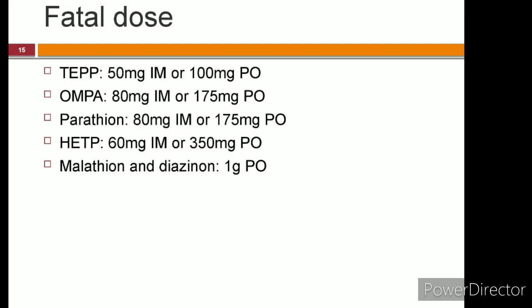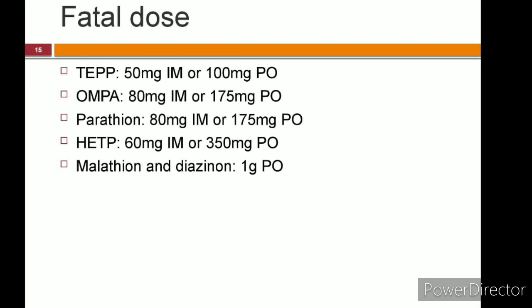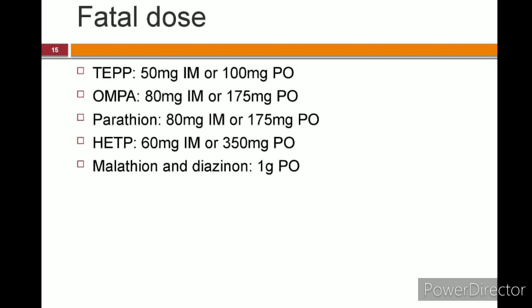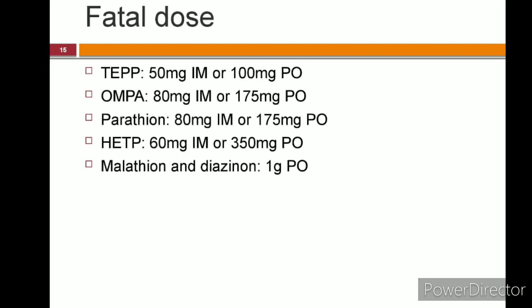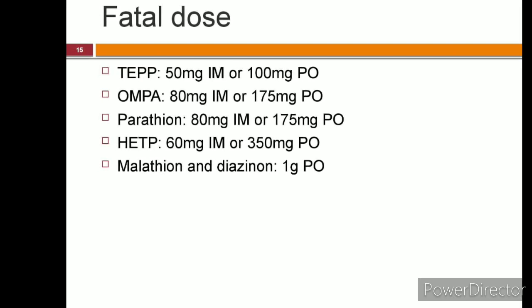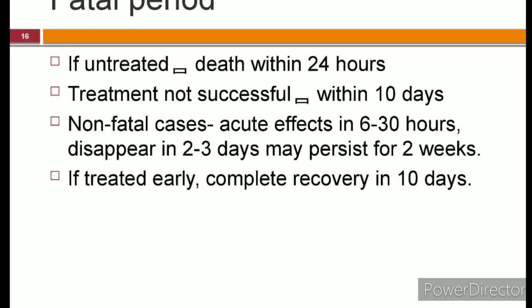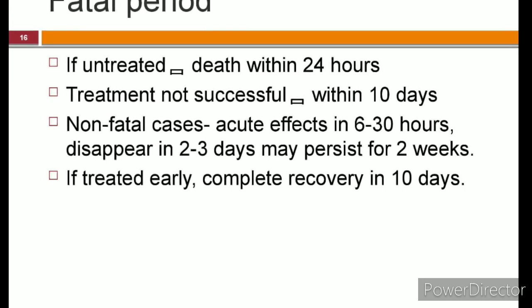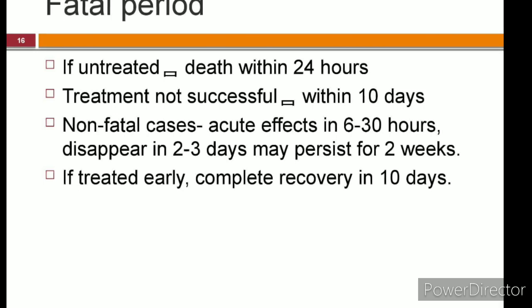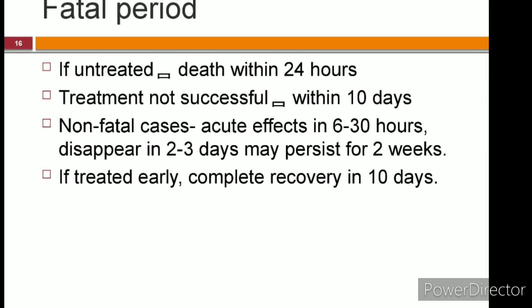The fatal dose differs for each compound. For TEPP it is 50 mg intramuscularly or 100 mg orally; for OMPA, 80 mg intramuscularly or 175 mg orally; for HETP, 60 mg intramuscularly or 350 mg orally; for malathion and diacinon, 1 gram orally. If the patient is not treated, death occurs within 24 hours. If treatment is unsuccessful, death may occur within 10 days. In non-fatal cases, acute effects start in 6–30 hours and disappear in 2–3 days. If treated early, complete recovery occurs in 10 days.